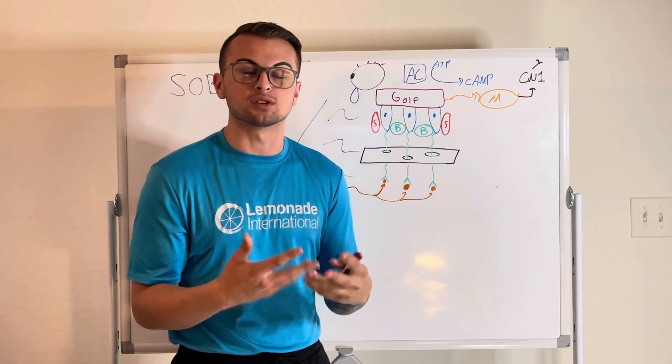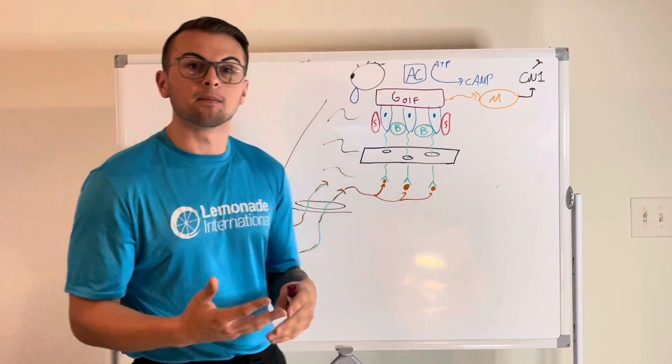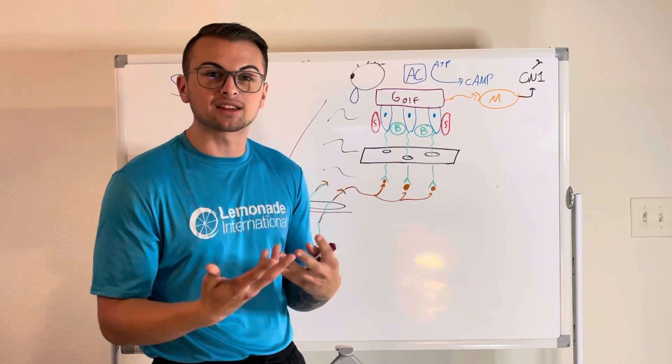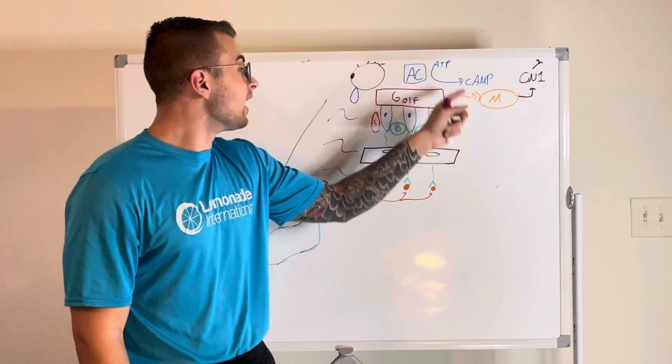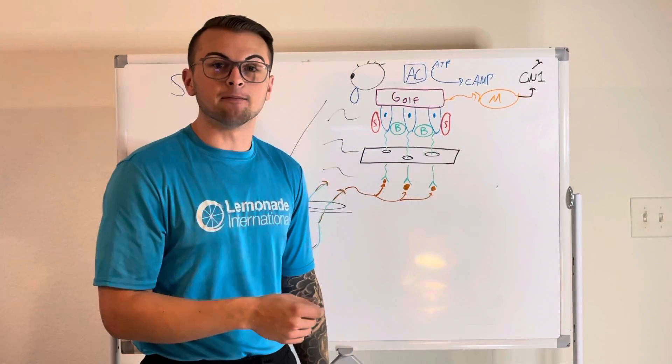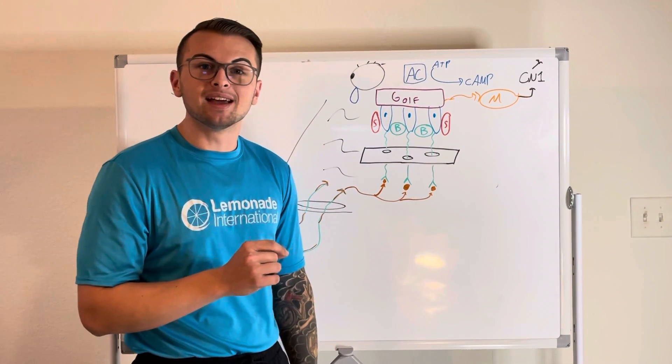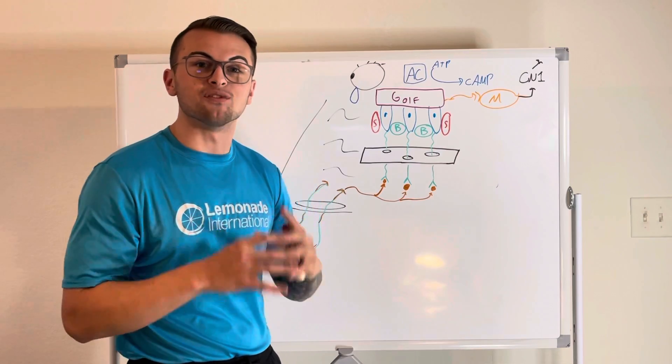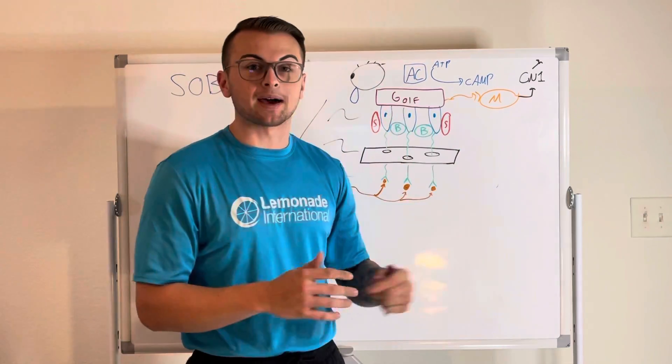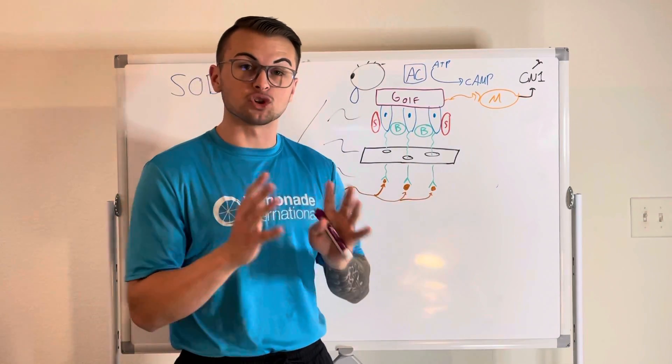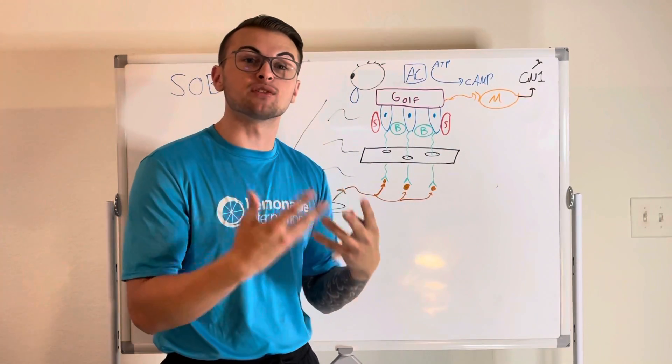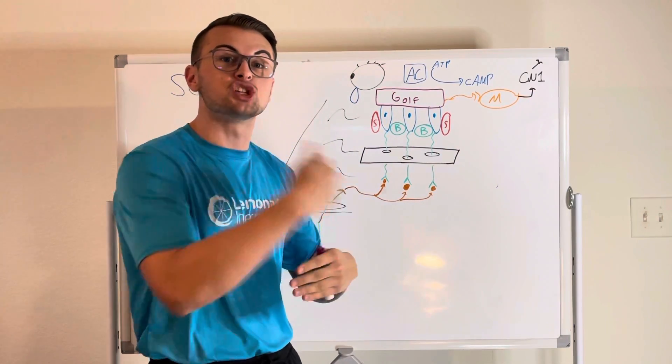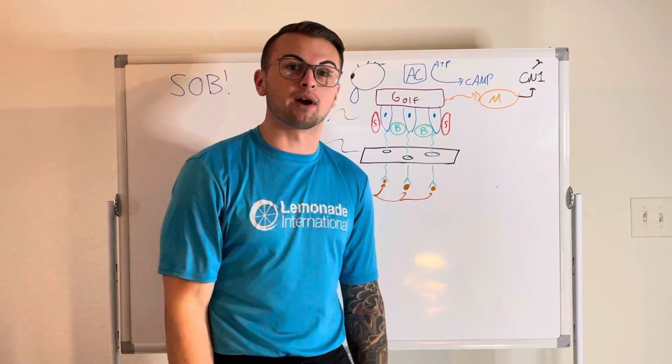And we know from our previous videos on the autonomic nervous system that when these GOLF proteins are activated, they activate adenylyl cyclase, which turns ATP into cyclic AMP. So cyclic AMP is an important second messenger. And eventually this increased amount of cyclic AMP will result in action potentials that eventually release different neurotransmitters, which start a chain reaction of messages, which is passed into our brain.